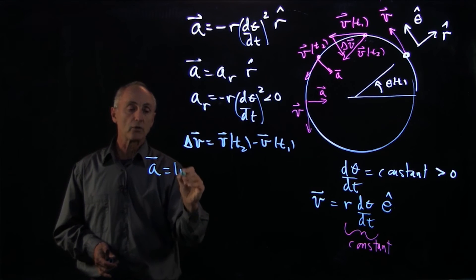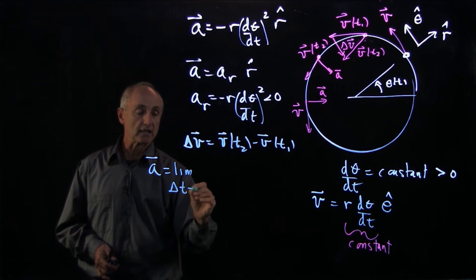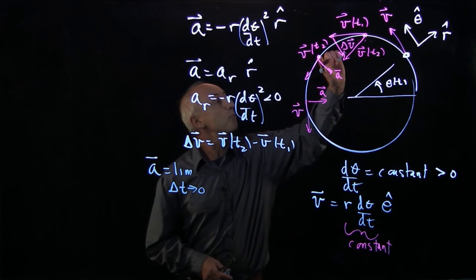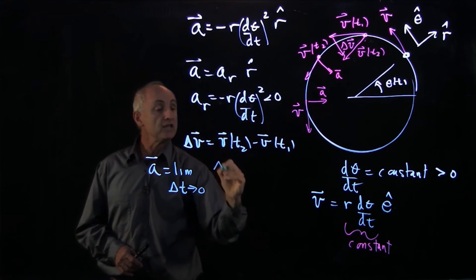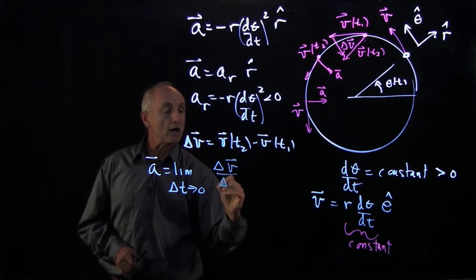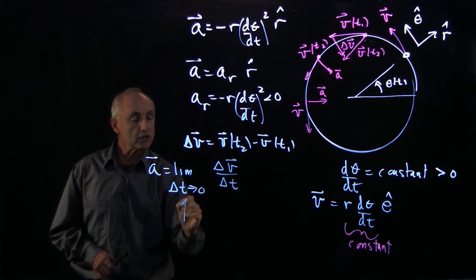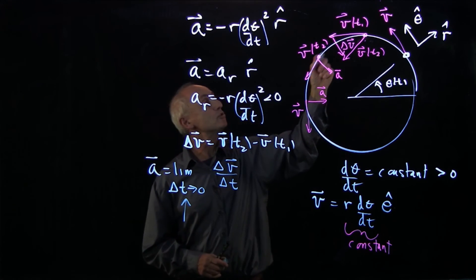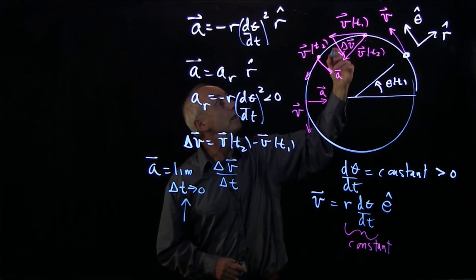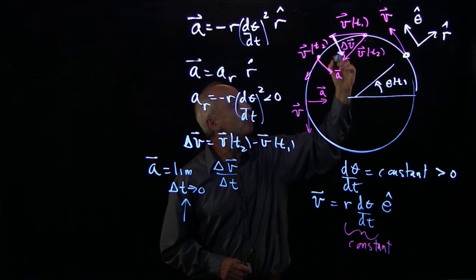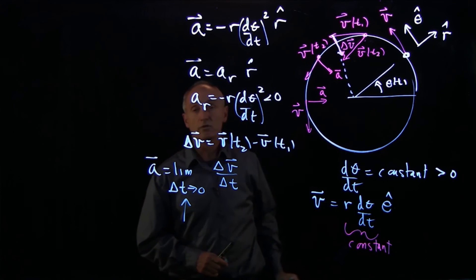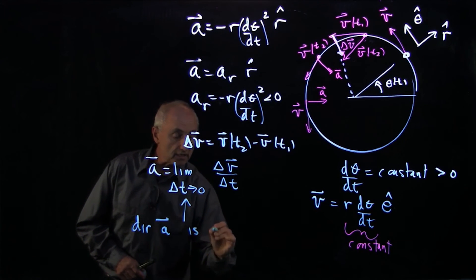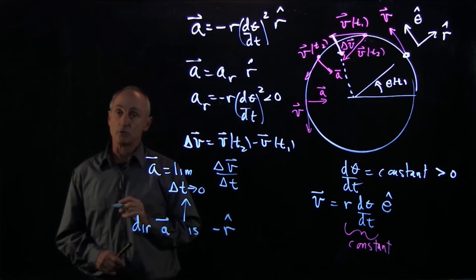Recall that acceleration, by definition, is the limit as Δt goes to 0 of the change in velocity over time. As we shrink down our time interval between t2 and t1, this vector will point towards the center of the circle. That's why the direction of acceleration is in the minus r̂ direction.